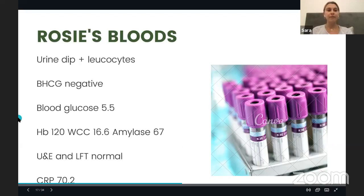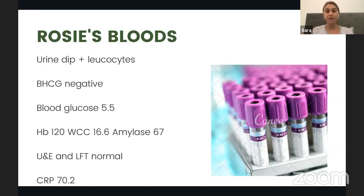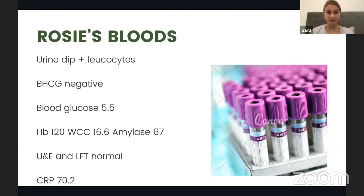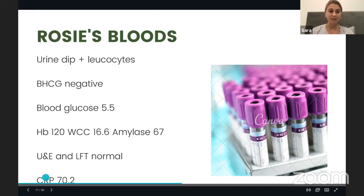Rosie's results: her urine dip shows one plus leucocytes, which can be seen in appendicitis. Her beta-HCG is negative — she is not pregnant. Blood glucose is normal. Haemoglobin is normal. White cells are significantly raised at 16.6. CRP is raised at 70.2. Amylase is 67, within normal limits. LFTs are normal. Her symptoms, raised white cells and CRP, and fever are all suggestive of appendicitis. The one plus leucocytes on urine dip can also be used as an adjunct to support the diagnosis.